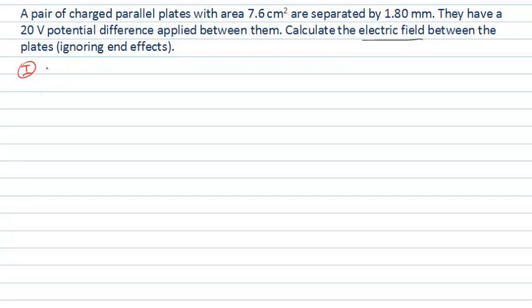So importantly here, we need to be thinking about the relationship between the electric field and some potential difference. The first thing we can see when we write those down is that one of them is a vector and one of them is a scalar, so we'll have to be taking that into account in our solution.